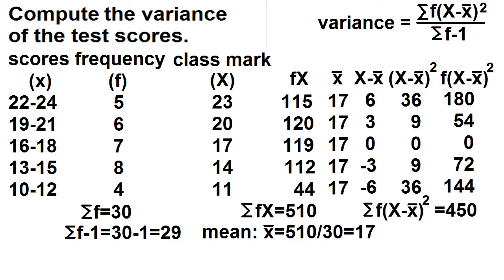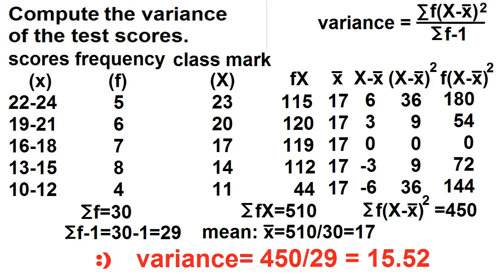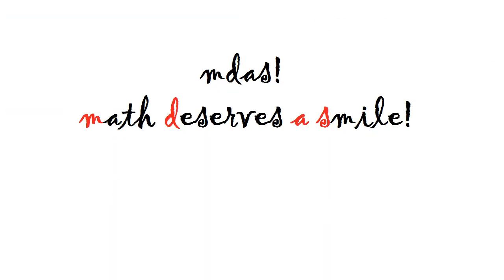Using the formula, the variance is just equal to 450 divided by 29, which is equal to 15.52.